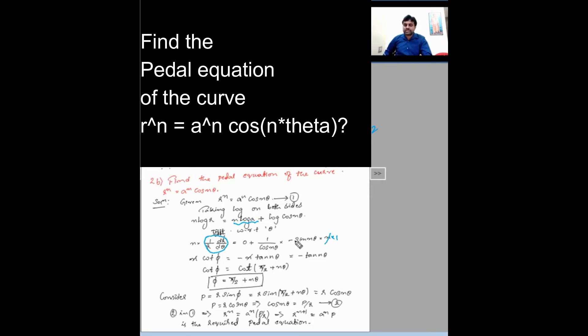n cot phi = -n sine/cos is tan, minus n tan n theta. n get cancelled. So you are left out with minus tan n theta.